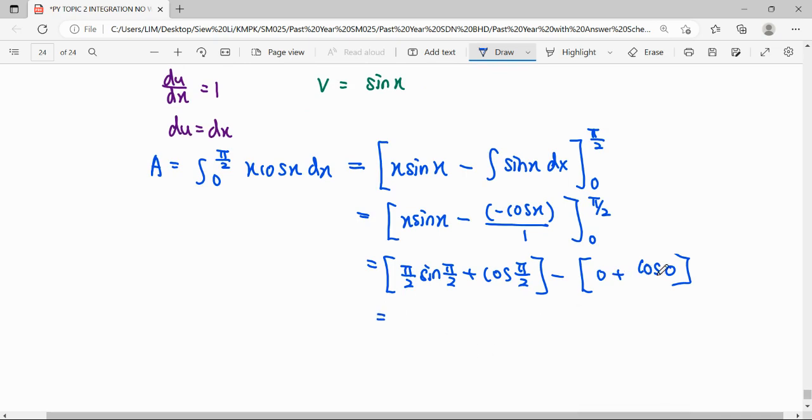Minus zero when we substitute 0 here, we get 0, then cos 0 equals 1. So our final answer: sin π/2 equals 1, so this is π/2. Cos π/2 equals 0, so our answer will be π/2 - 1.